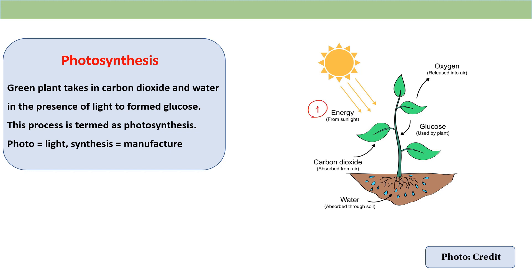Number one: carbon dioxide diffuses through stomata into the leaf.